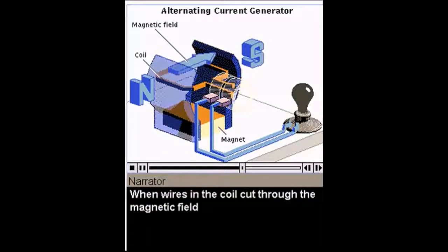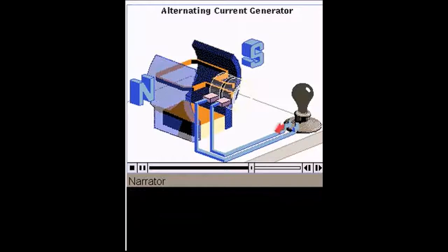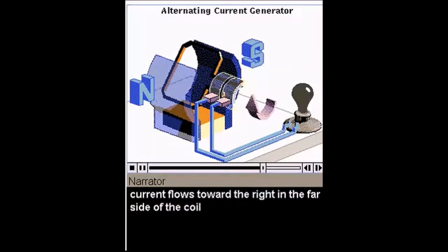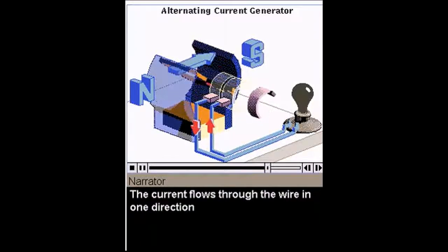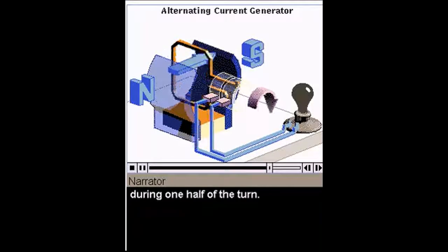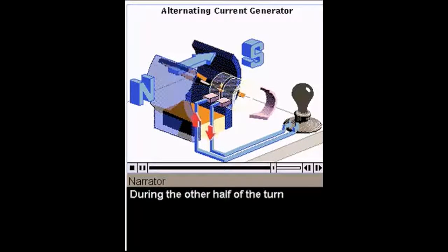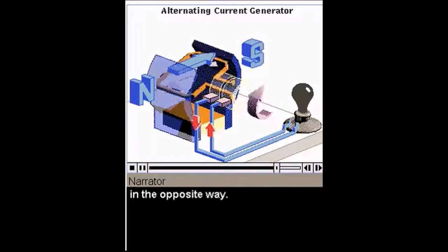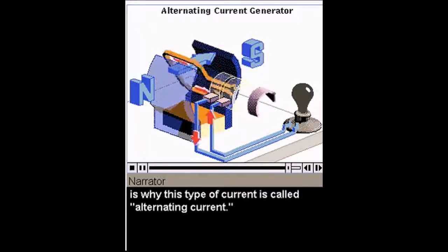When wires in the coil cut through the magnetic field between the poles of the magnet, current is induced in the wire. When the coil is turning in the direction shown, current flows toward the right in the far side of the coil and toward the left in the near side. The current flows through the wire in one direction during one half of the turn. As it does so, the current changes from zero to maximum flow, then back to zero. During the other half of the turn, the current flows in the opposite direction, since the wires are moving through the field in the opposite way. This changing of direction during each cycle is why this type of current is called alternating current.